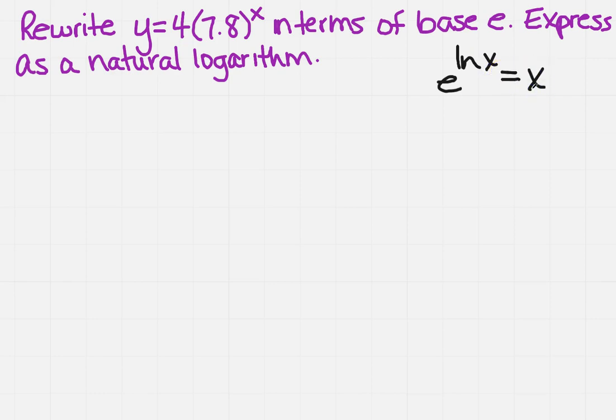So if I apply that principle to what I already see, then that would be 4e, and then I would have the ln of 7.8 times x. Because remember, the x is already raised to it up there. So if I do that, is there any way that I can simplify that?